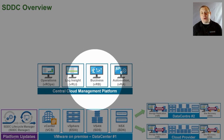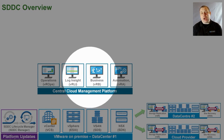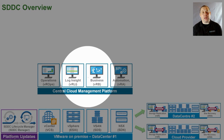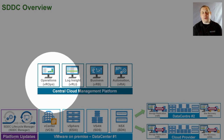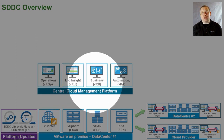vRealize Business is a very popular product — it tells you how much it costs to run a virtual machine in a particular data center, how much it would cost in a different data center, how much it would cost to move to another cloud provider, or back from a cloud provider to on-site. It puts real-world costs around your infrastructure. Combined with vRealize Operations, it can also report on how much of those resources you're wasting, and therefore how much of the cost is wasted because machines aren't built efficiently.